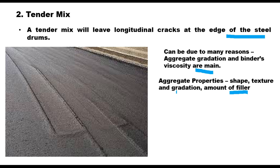Gradation is also very important. Sand-size particles in the gradation — that is, material passing 2.36 mm — tend to be rounded and act as ball bearings. Rounded fine aggregate particles may allow larger particles to roll within the mix structure. If natural sand is used in the mix, this problem is almost certain. A hump in the gradation at the 300 micron size can also lead to tender mix.